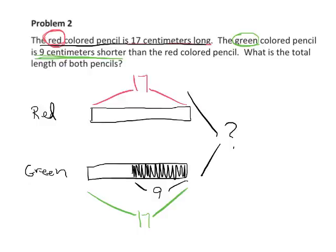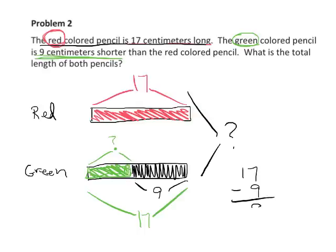And so what is the total length of both pencils? So we want to know this total length right here. But in order to answer that question, we need to know this length right here. Because what we're going to do is we're going to add this length, which is 17. And we need this length right here, which we don't know what that is. All right, so let's do that. Well, how are we going to figure out the length of the green pencil? Well, it's subtraction. We're going to do 17 minus 9, and that gives us 8. So we know that our green pencil is 8 centimeters long. So right here, so we can cross that off and make it an 8. It's 8 centimeters long.